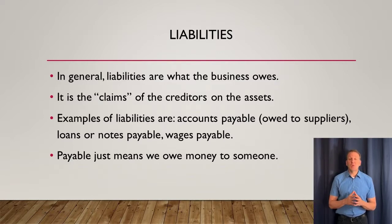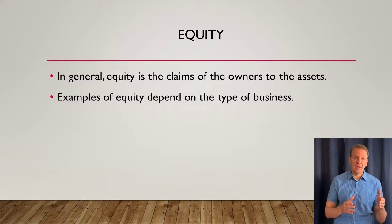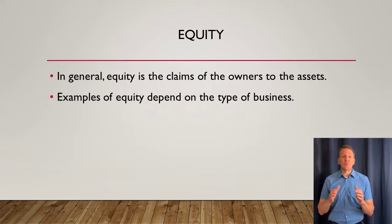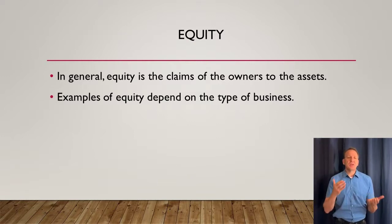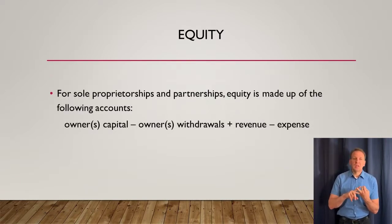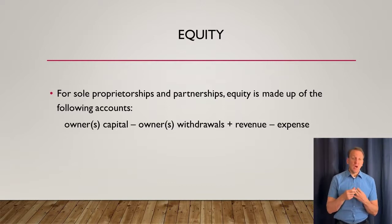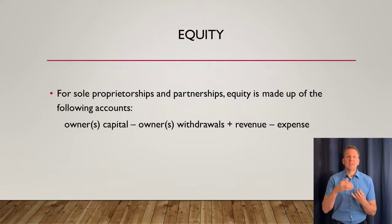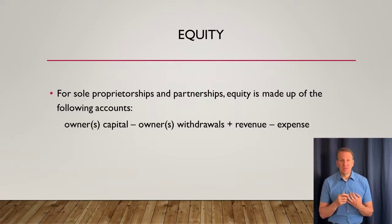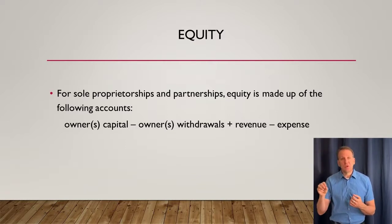The next part of the accounting equation is the equity section. The equity section represents the claims by the owners — remember, liabilities were the claims by creditors. The examples of equity depend on what type of business we're looking at. For a sole proprietorship or a partnership, equity is made up of the owner's capital account, the owner's withdrawal account, plus revenues minus expenses. The capital account is money or items the owner puts into the company; the withdrawal account is money the owner takes out of the business.